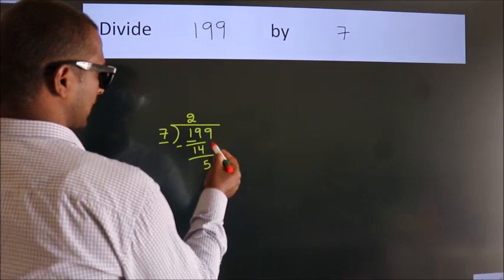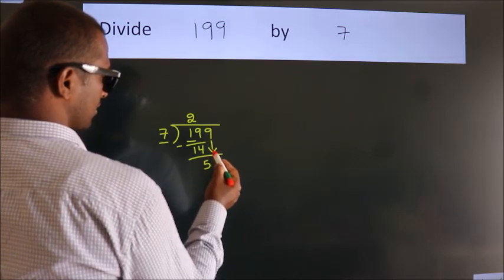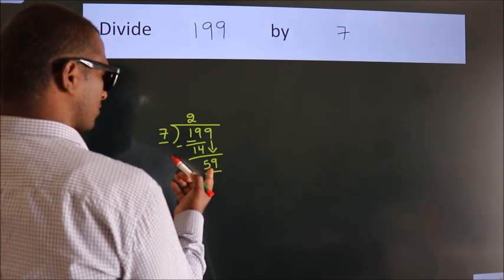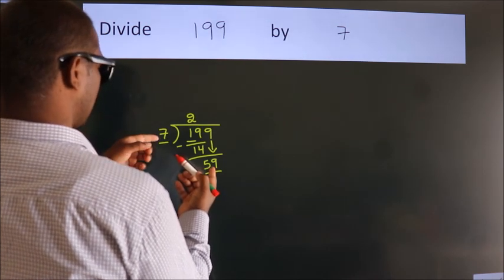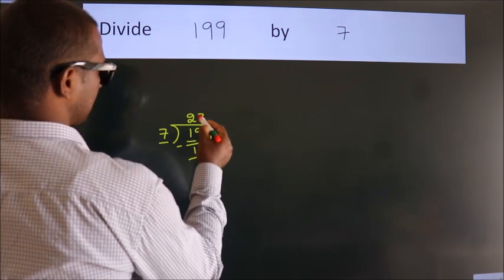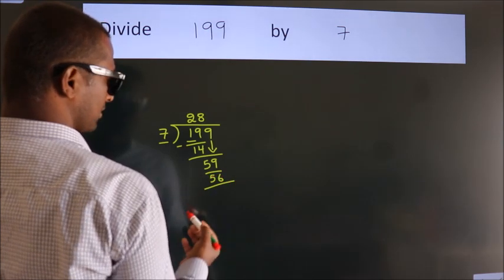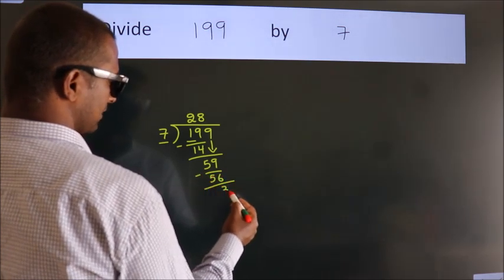After this bring down the beside number. So 9 down. So 59. A number close to 59 in 7 table is 7 eights, 56. Now we subtract. We get 3.